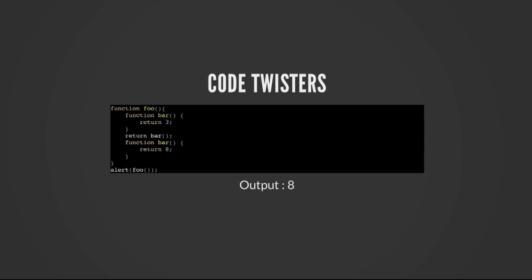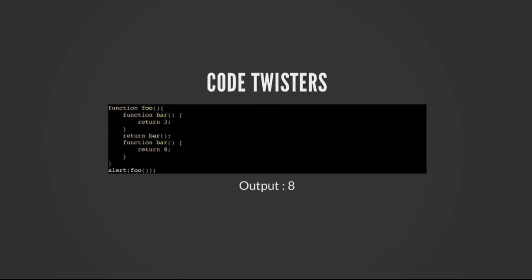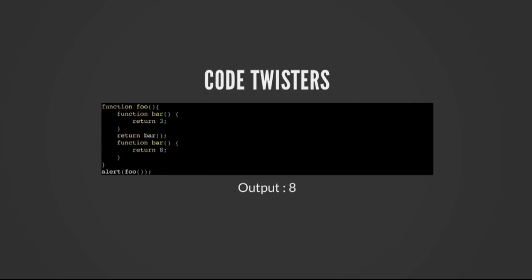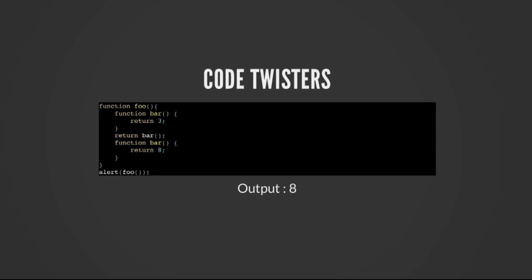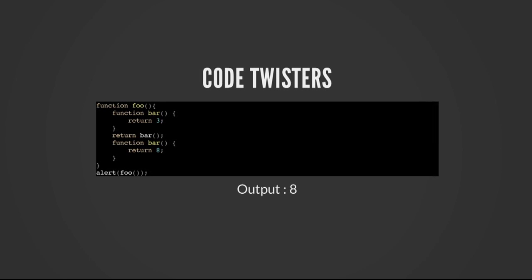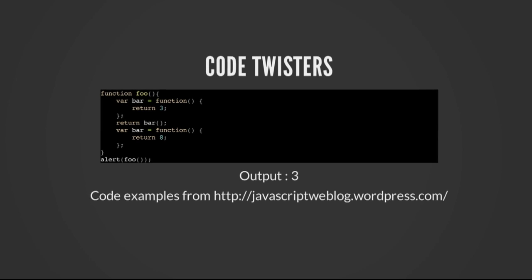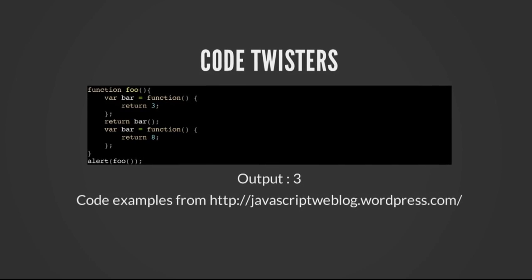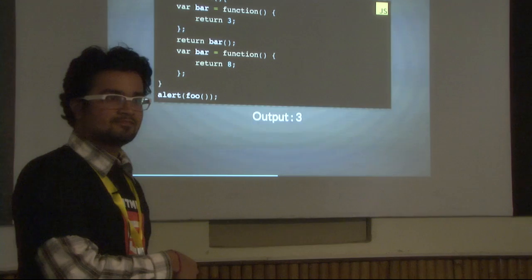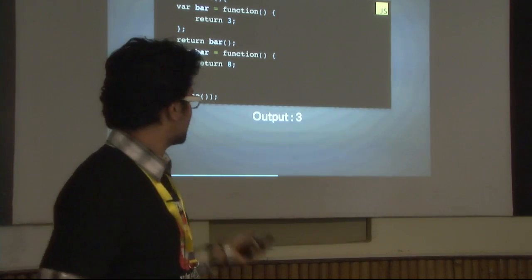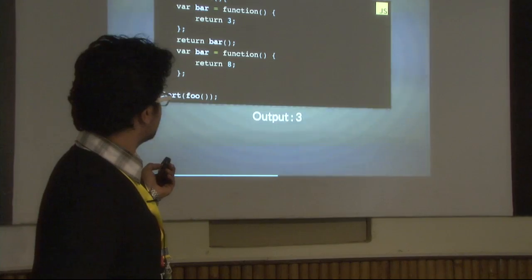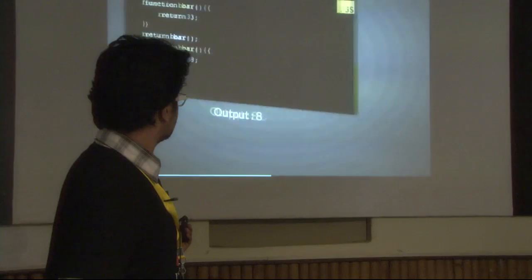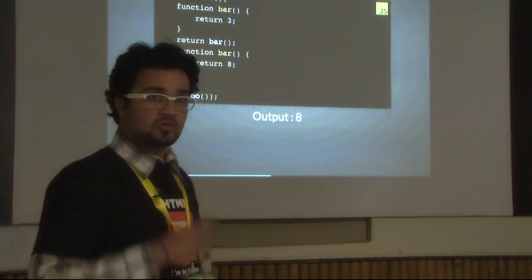Let's put our knowledge to practice. What would the output be? I have defined two function declarations `bar` twice, then I output the value of what the function returns — the output would be 8. Now instead of a function declaration I'm using a function expression — what would it output in this case? It is 3. Why? Because in this case the variable stays the same, but with a function declaration, the whole declaration is hoisted to the top.